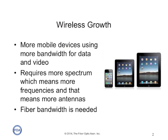Subscribers are using more mobile devices which use more bandwidth, especially for data and video. That requirement for more bandwidth requires more spectrum, which means more frequencies, and that means more antennas. So more fiber bandwidth is needed for those cellular systems.